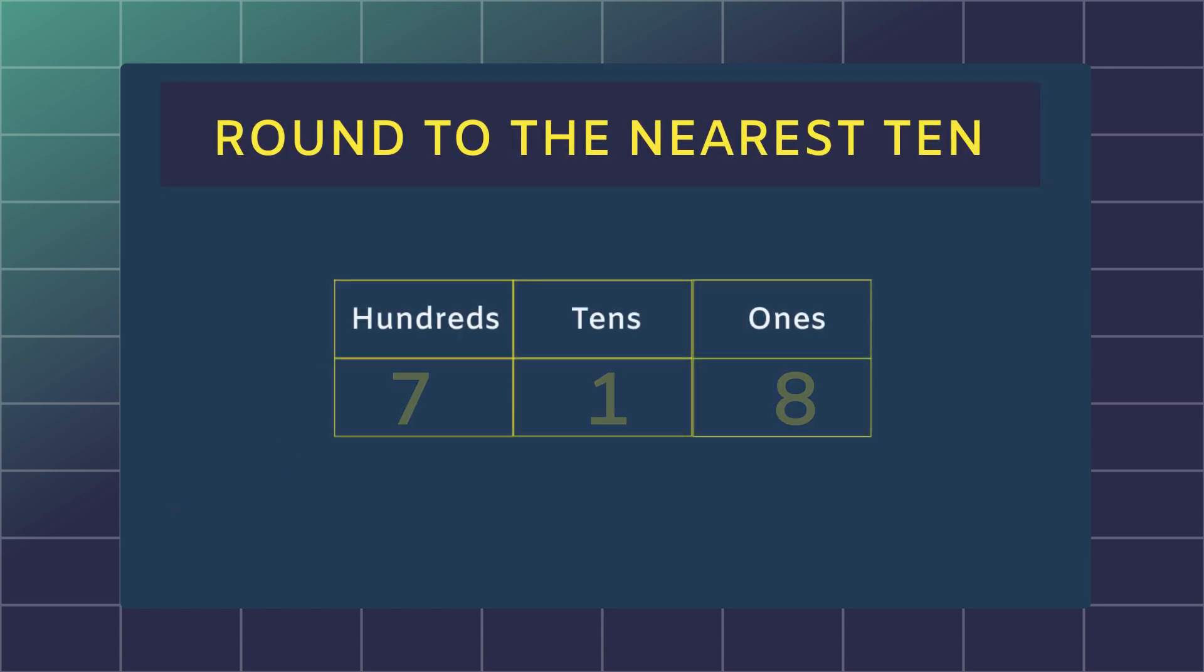Take the whole number 718 and round to the nearest ten. The last digit ends in an eight, so we know we have to round it up. However, we need to know that the eight's in the ones place, we'll round up the one of the tens.